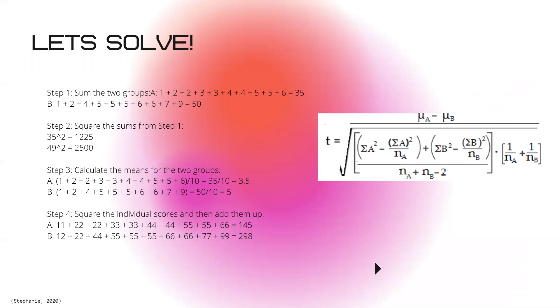35 divided by 10 is 3.5. We're using the same technique for data set B, so 50 divided by 10 equals 5. Step four is to square the individual scores and then add them up. We have 145 for group A and 298 for group B.